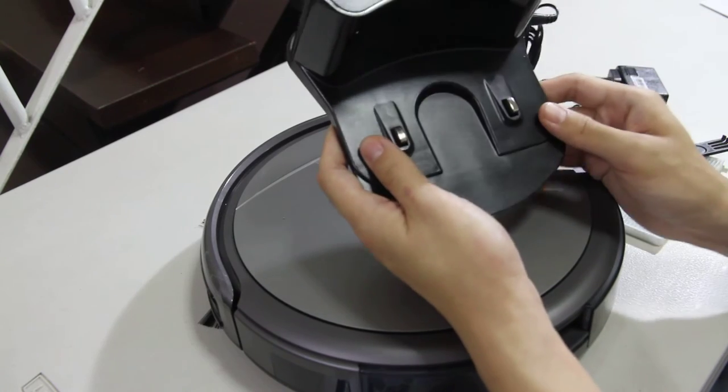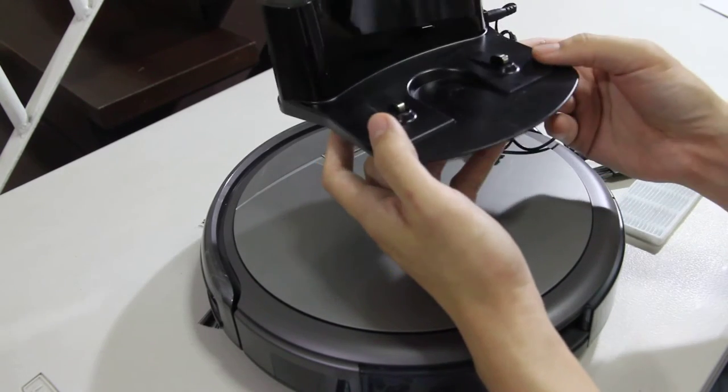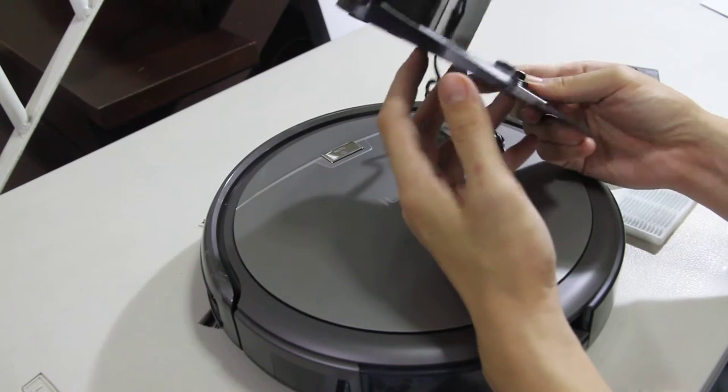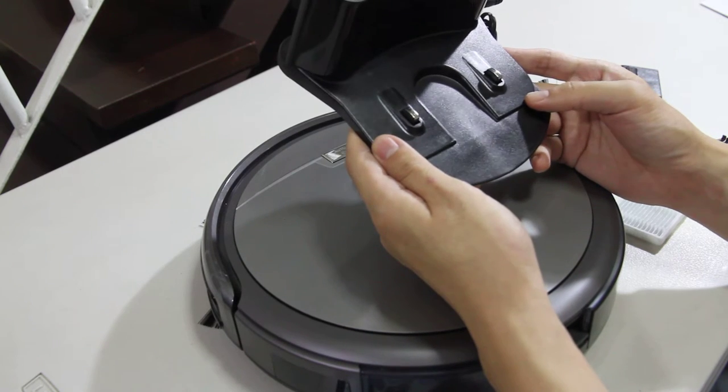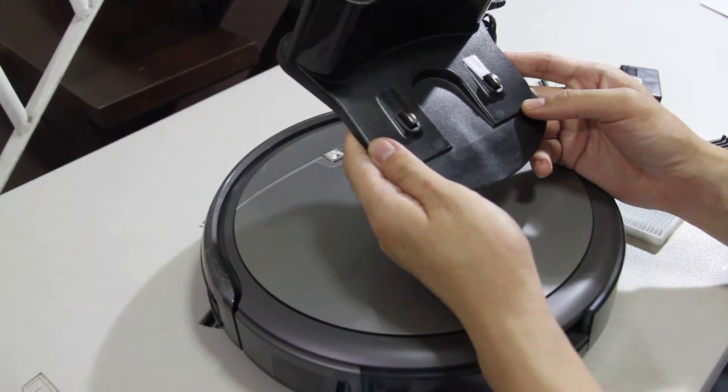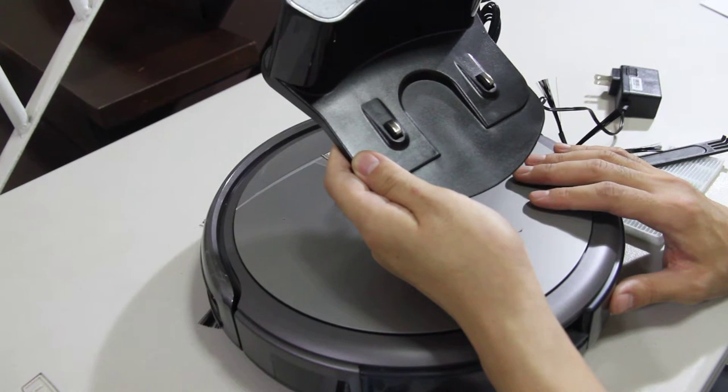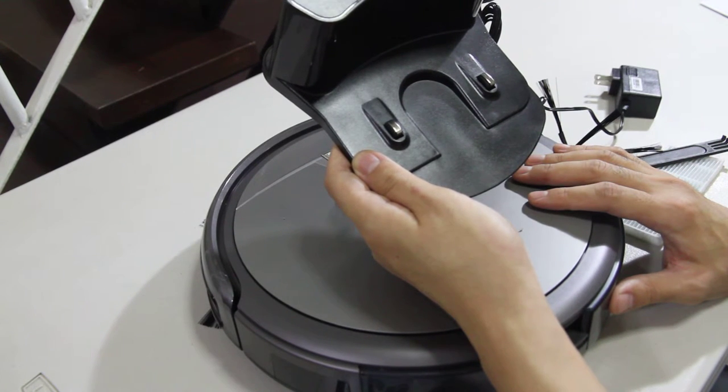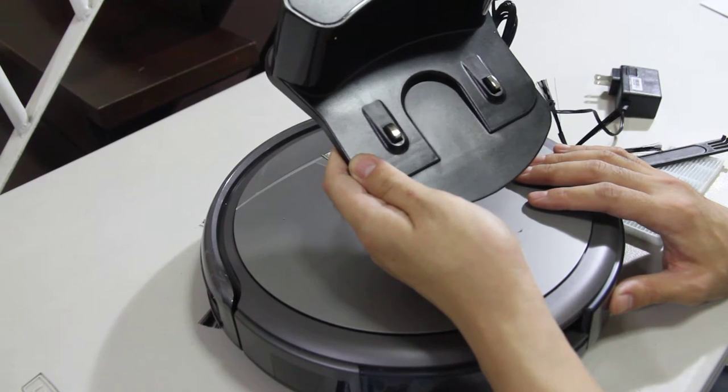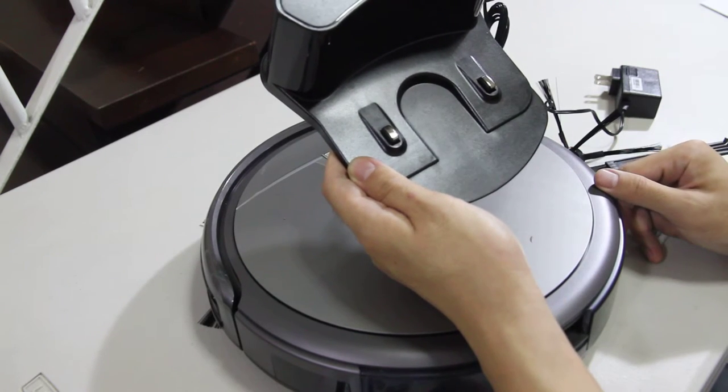And this is the charging station here. And this is where the robot docks when the battery runs low. And I'll show you a video on how this robot navigates, and I'll put everything in the description below.